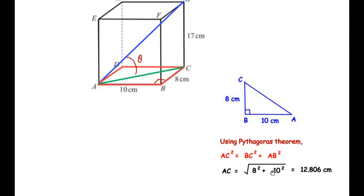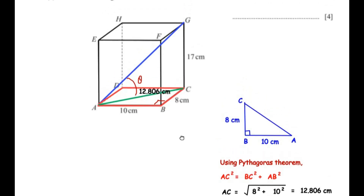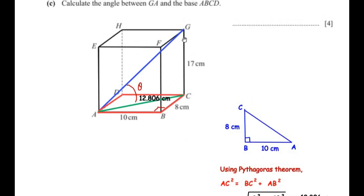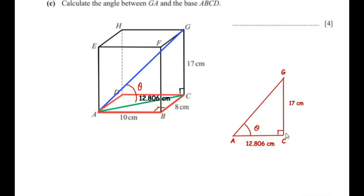Now that we have AC, let us focus on right-angled triangle ACG. The face BCGF is also a rectangle, so angle C is a right angle. The triangle is right-angled at point C, with GC = 17 centimeters and AC = 12.806 centimeters. We need to find theta — the angle made by line GA with the base.